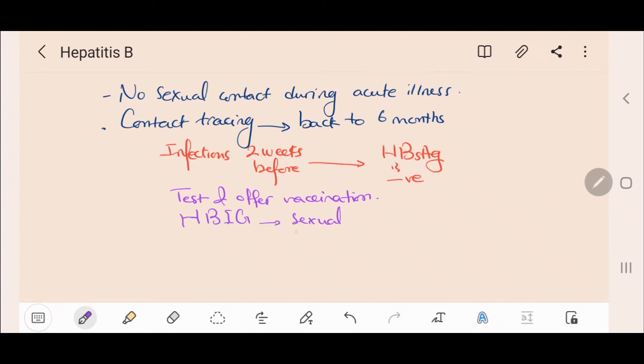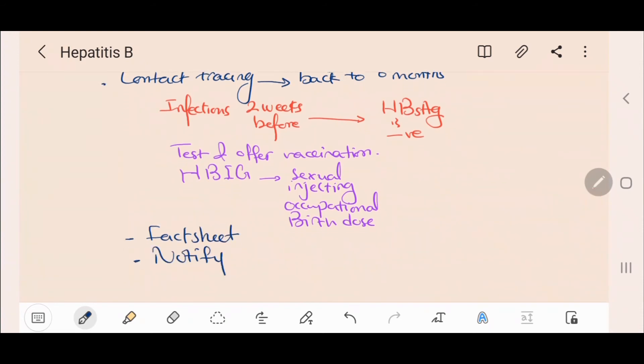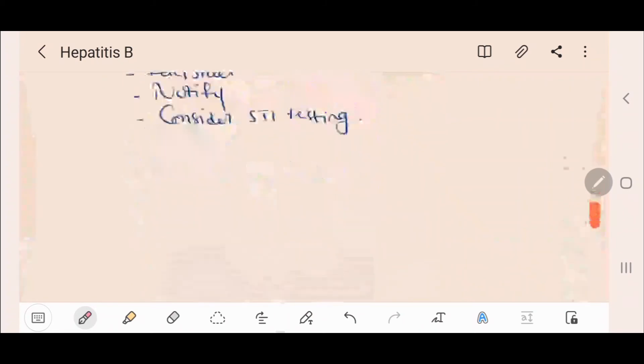Immunoglobulins are given in certain high risk situations such as sexual, injecting or occupational exposure, or as birth dose to reduce transmission from a Hepatitis B surface antigen positive mother to her child. We should also provide the patient with a fact sheet, notify the state and territory health department and consider comprehensive STI testing.